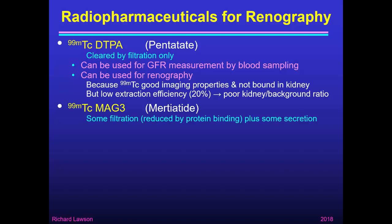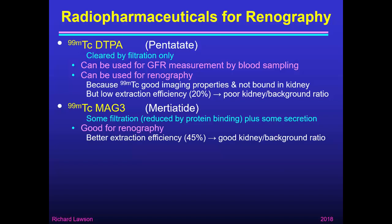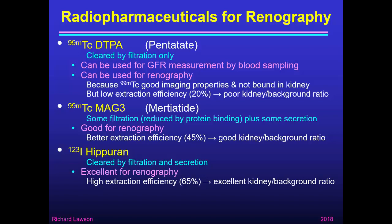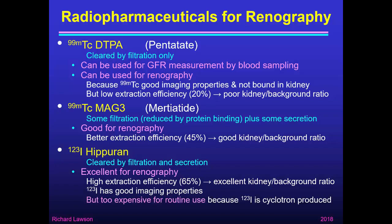Technetium-99m labelled MAG3 undergoes filtration — though reduced by protein binding — and some secretion. It's good for renography because its extraction efficiency of 45% is better than DTPA, meaning more is in the kidney, less in the blood, and you get a good kidney-to-background ratio. I-123 labelled Hipuran is cleared by filtration and very effective secretion, and is excellent for renography because its high extraction efficiency of 65% gives a lot in the kidney, very little left in the blood, and an excellent kidney-to-background ratio. I-123 has good imaging properties for the gamma camera, making it ideal — but unfortunately it's too expensive for routine use, as I-123 is cyclotron-produced, making it expensive and of limited availability.